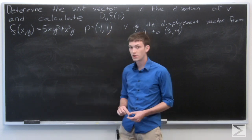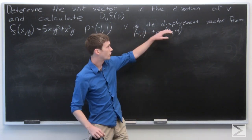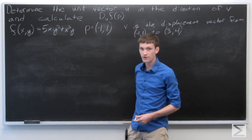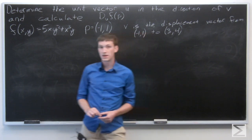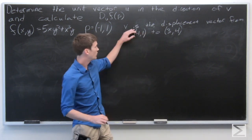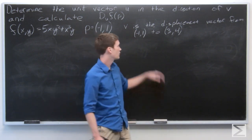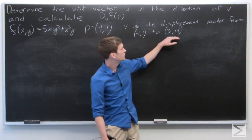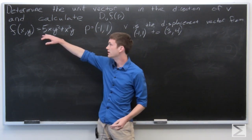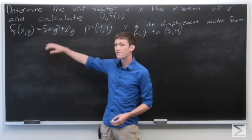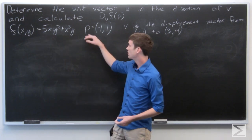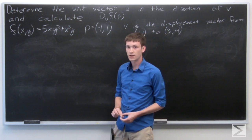In this problem, we're asked to determine the unit vector u in the direction of v, and calculate the directional derivative of f at p in the direction of u. We're told that v is the displacement vector from the point negative 1, 1 to 3, 4. Our function f is equal to 5xy squared plus x cubed y, and p is the point negative 1, 1.